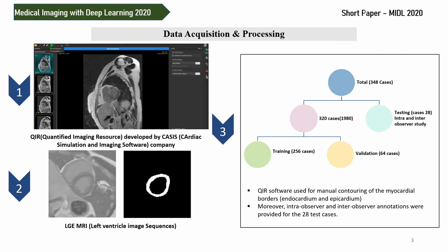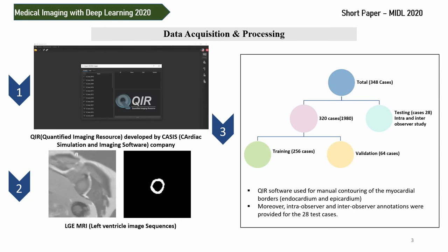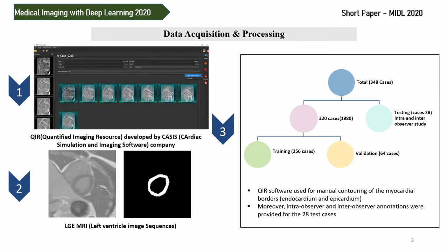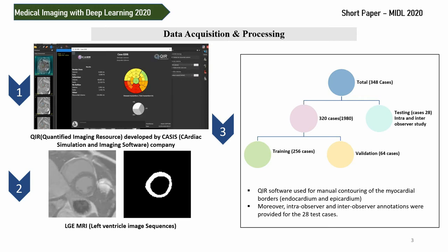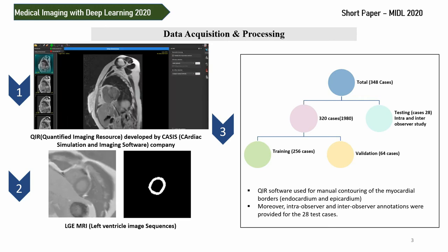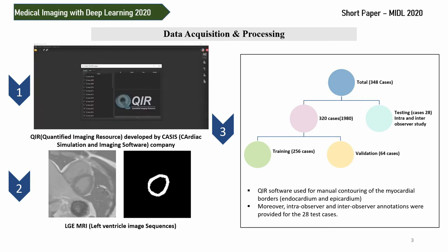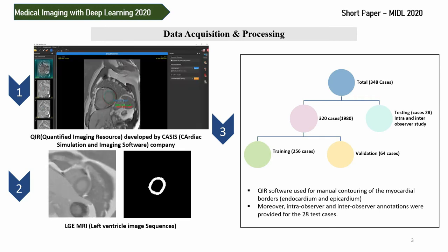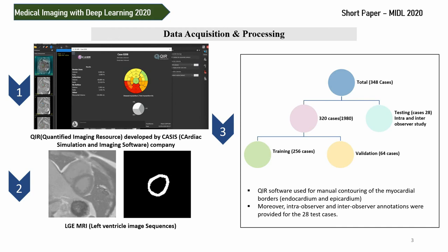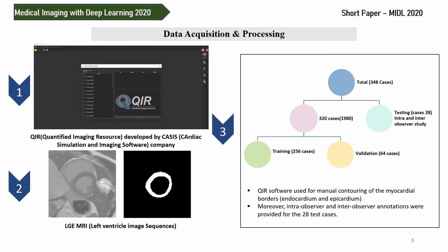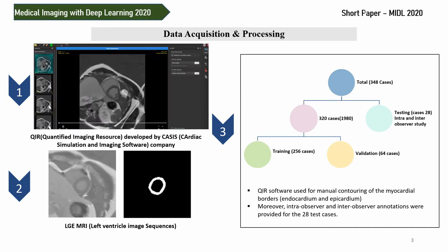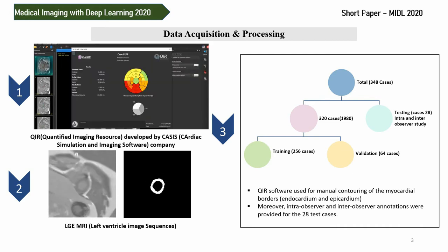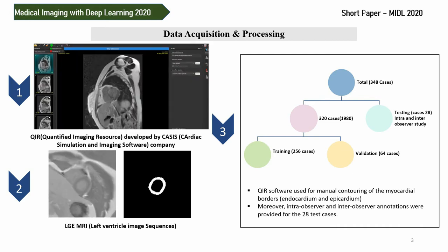Experienced cardiologists with more than 14 years of experience provided 348 cases from University Hospital Dijon, France. In this study, we have used 320 cases for training and validation, and 28 cases for testing. Moreover, we have intra-observer and inter-observer annotations for 28 patients in order to further validate our proposed model.